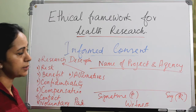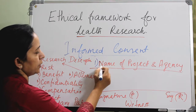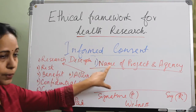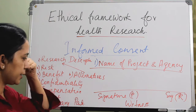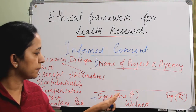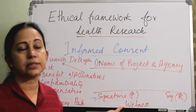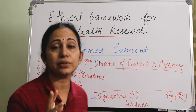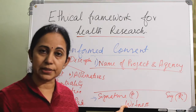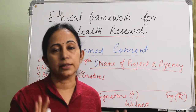This is how you write an informed consent: at the top, write the name of the project along with the agency. There should be a body section in the middle. At the end, there should be three signatures: the signature of the participant, the signature of the researcher or principal investigator, and the signature of a witness. This witness should not be part of the research process in any way — the witness should not be connected with the research work at all.